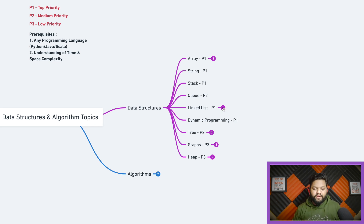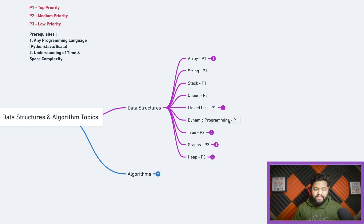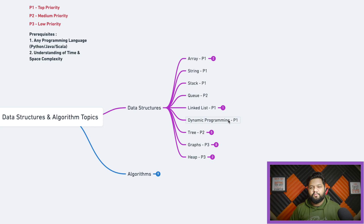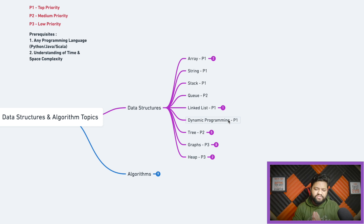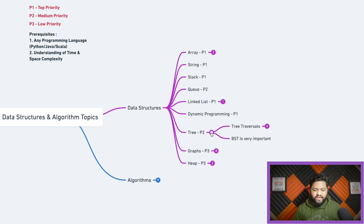For linked lists, practice multiple questions related to singly linked lists — no need to jump to complex things like doubly linked lists. Dynamic programming is labeled P1. I remember interviews where DP questions were sometimes straightforward and sometimes presented as a story problem where I had to figure out that DP was the right approach. That's why I consider dynamic programming definitely important and have labeled it P1.